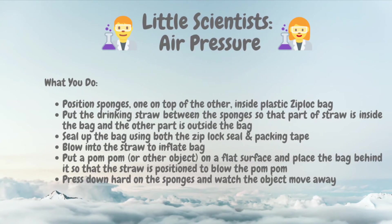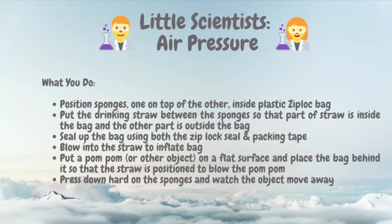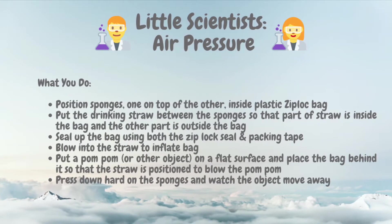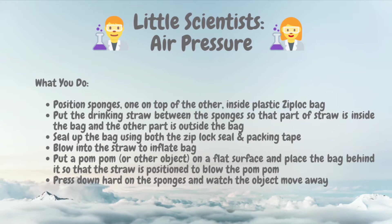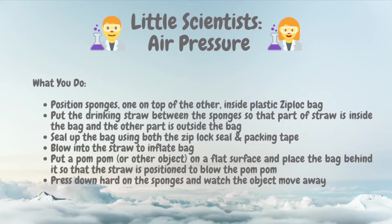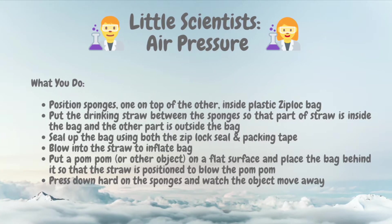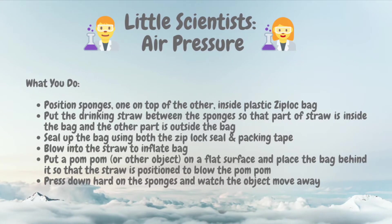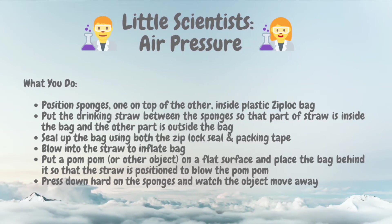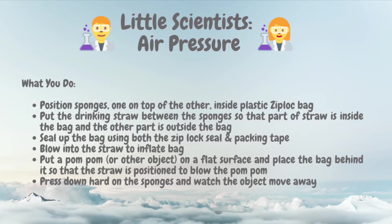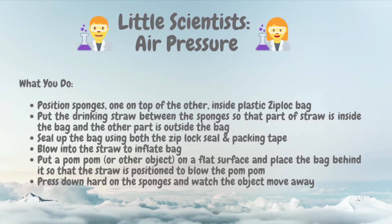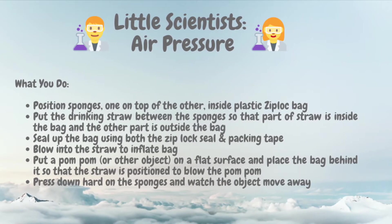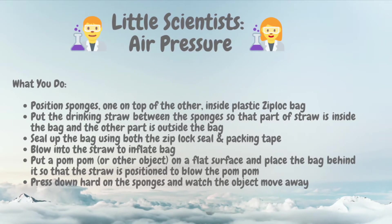Now that we have our materials together, we're going to start by making our homemade air pump. We're going to position the sponges one on top of the other inside the plastic ziploc or similar type bag. Then we'll put the drinking straw between the sponges so that part of the straw is inside the bag and the other part is outside. Next, we'll seal up the bag using both the ziploc seal and packing tape. I actually used two bags — one bag inside the other in addition to the packing tape — just to make it extra secure, since the first time I blew into the bag it actually ripped.